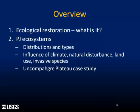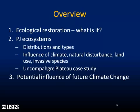I'll talk a little bit about PJ systems in general — PJ ecosystems in terms of distributions and types, influence of climate, natural disturbance, land use, invasive species, and so on. I'll focus a fair amount on the Uncompahgre Plateau as a case study, and touch briefly on the potential role of climate change on the future condition and health of pinyon-juniper woodlands.